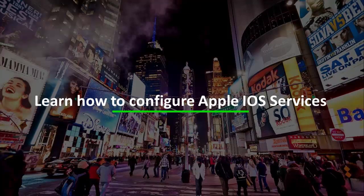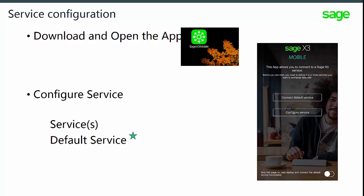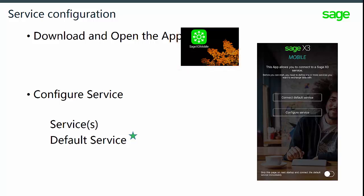Let's take a look at how to configure the Apple iOS service. First, you have to download and open the app, and then configure the service. To start, select the service button to configure the service, and then use the plus button to add a new service.